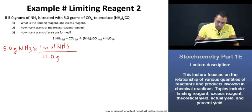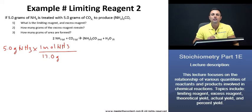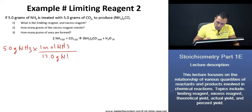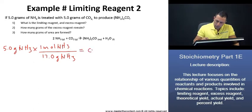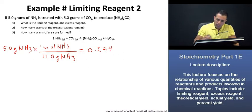Should you require more information on how to find molar mass, we covered that earlier in this lecture series. Once we equate the following, we end up with a value of 0.294 moles of ammonia.